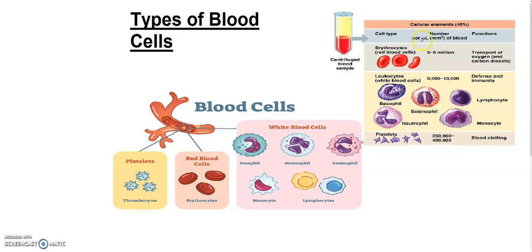Their number, as you can see on the screen, is 5 to 6 million per microliter. Their function is to transport oxygen from lungs to tissues, and it is also very helpful to transport CO2 from tissues to lungs. Their number varies from 4.5 to 5 million per cubic millimeter.